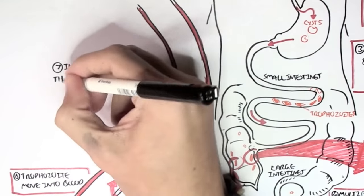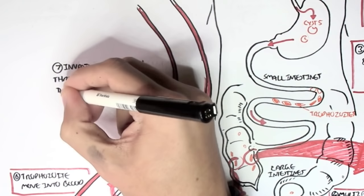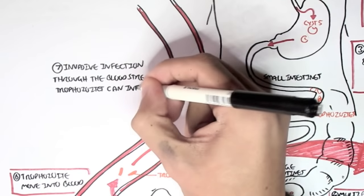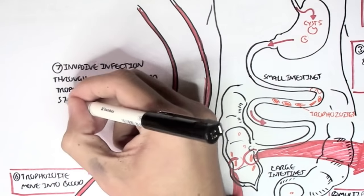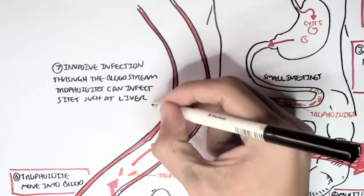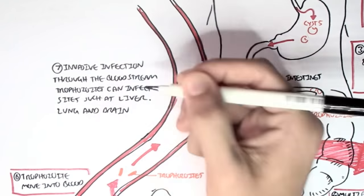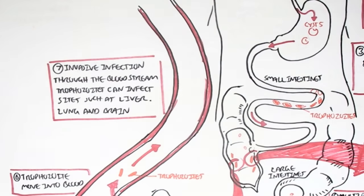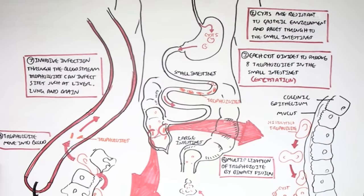Invasive infection is when the trophozoites, through the bloodstream, can infect other organs, such as the liver, the lungs, and, rarely, the brain.